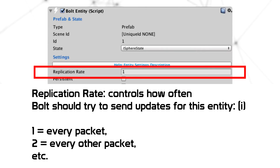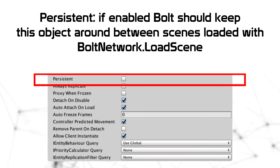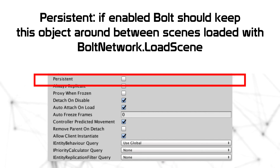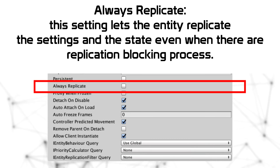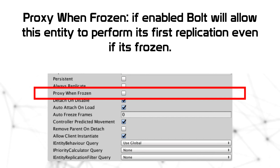The Replication Rate controls how often Bolt should try to send updates for this entity: one means every packet send, two means every other packet send, and so on. The Persistent field controls whether Bolt should keep this object around between scene loads via BoltNetwork.LoadScene. Always Replicate — if enabled, lets the entity replicate settings and state even when there is a replication-blocking process like loading a scene or freeze. Proxy When Freeze — if enabled, Bolt will allow the entity to perform its first replication even if it's frozen.